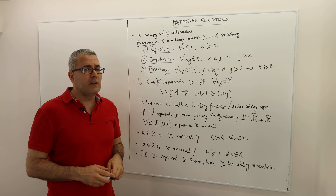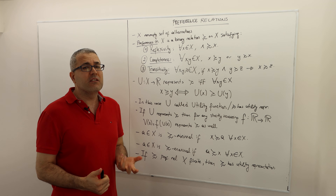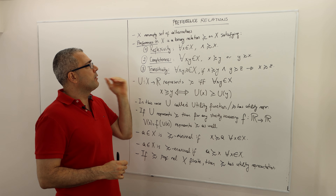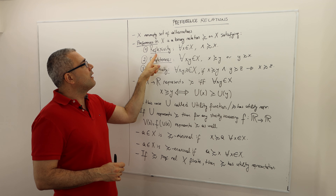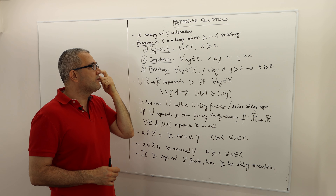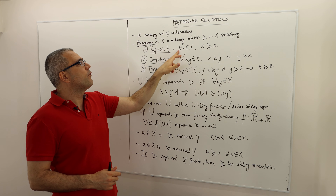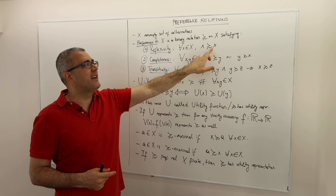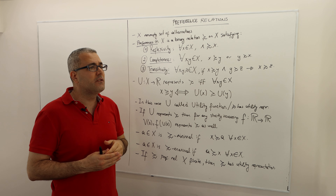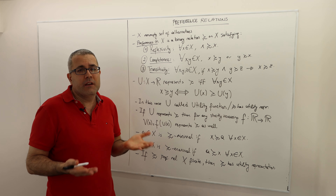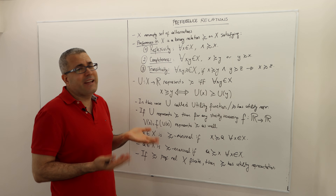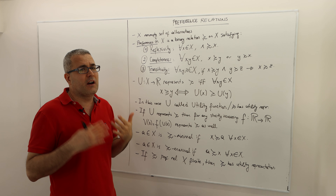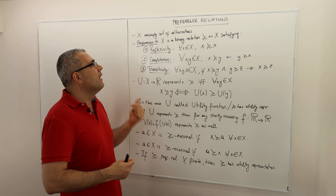which satisfies the following three properties or axioms. We already talked about these properties when we talked about binary relations, but let's remember them. The first one: a preference relation is reflexive. What does a reflexive binary relation mean? For every alternative in the set X, the alternative should be at least as good as itself. This is quite intuitive, but it's highly technical.